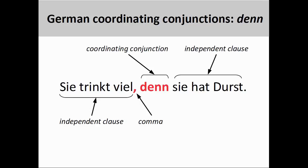The coordinating conjunction 'denn,' meaning 'for,' 'because,' or 'since,' is used to express a causality between two independent clauses. For example, the first clause, 'Sie trinkt viel' — 'She drinks a lot' — is further modified by the second clause, which gives the reason why the subject is drinking so much: 'Sie hat Durst' — 'She is thirsty.' 'Denn' is used when the causality between the two clauses is less strictly necessary and the function of the second clause is to introduce helpful, but possibly more parenthetical, information. The subordinating conjunction 'weil,' although having the same meaning in English as 'denn,' implies a more strictly necessary condition between the two clauses.